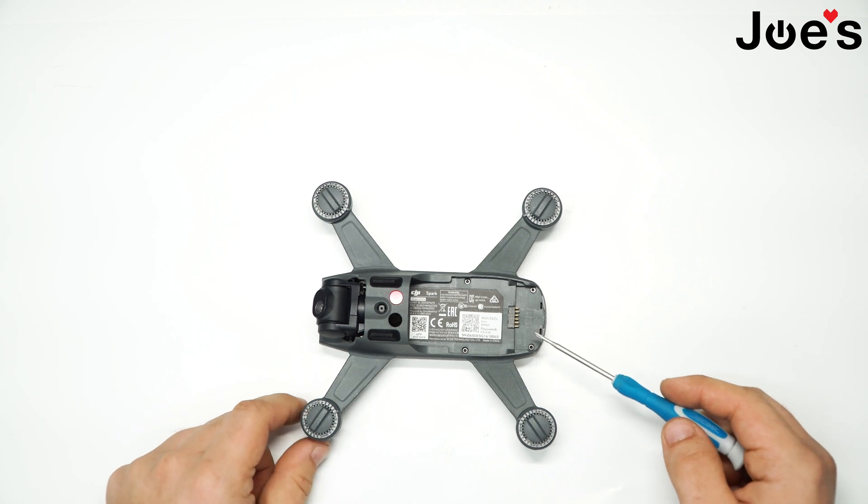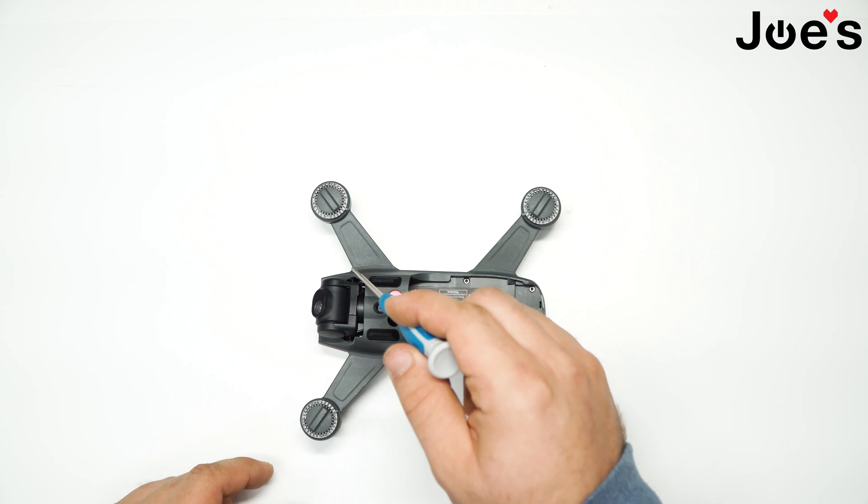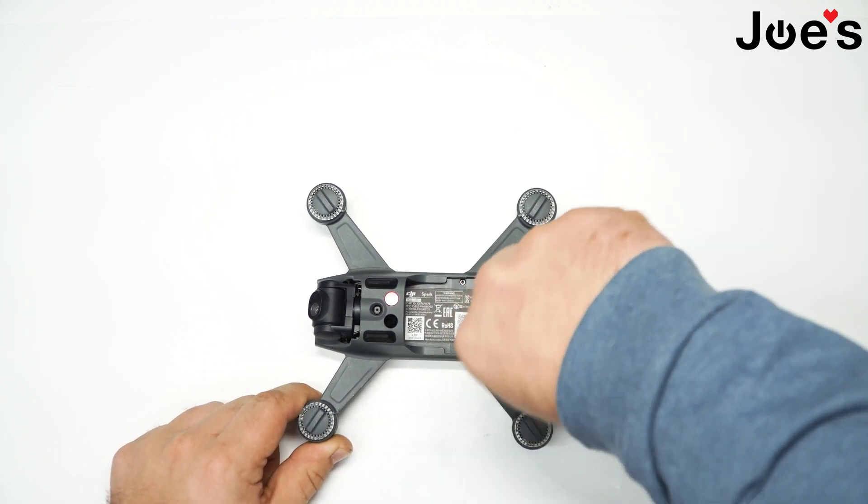Now you have six screws to remove: one, two, three, four, and then five, six right by the camera here. There's one on this side, one on that side. So we go ahead and pop those out.